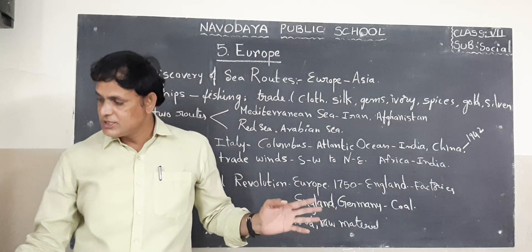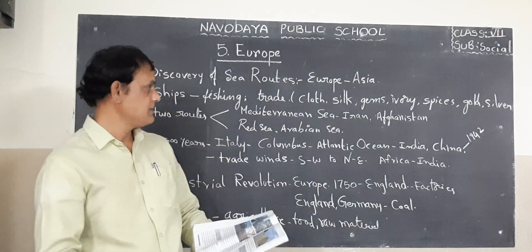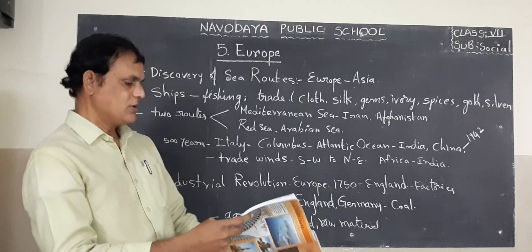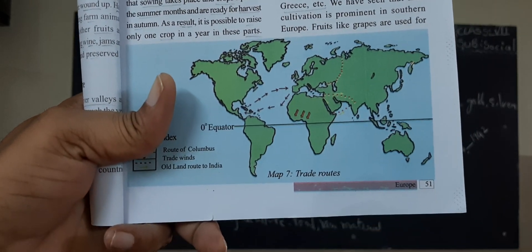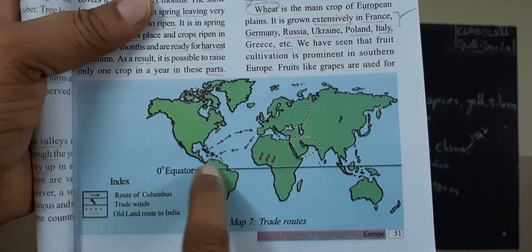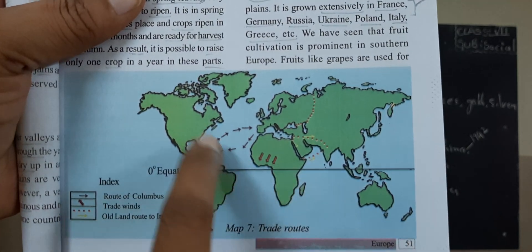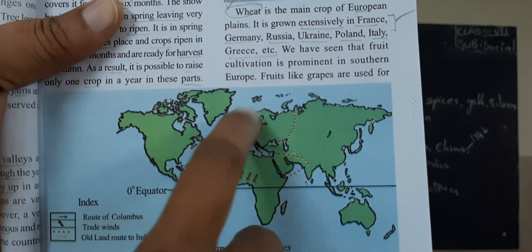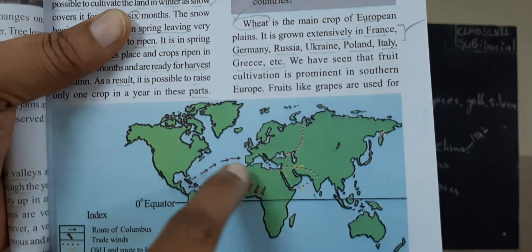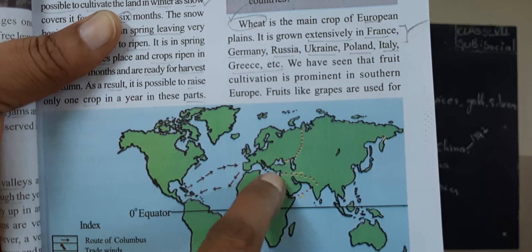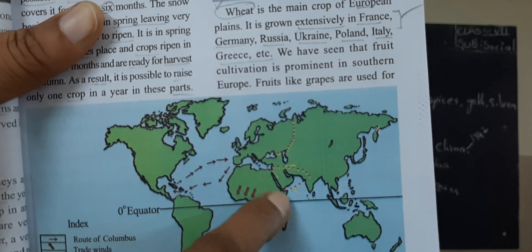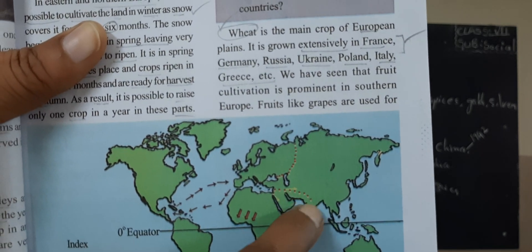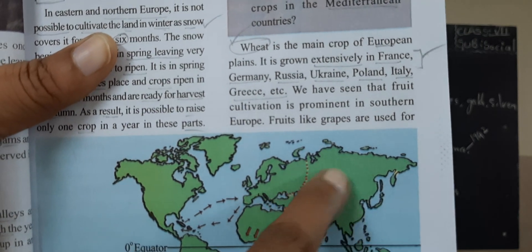Now children, this is the main lesson of your class. Turn your textbook pages to page number 51. Look at the map — this is the Equator, these are the continents. In our lesson, this is the European continent. The countries of Europe include Portugal, Spain, France, and Italy. Here is the Mediterranean Sea, here is the Red Sea, and this is the Arabian Sea — which is to the west of our India. Afghanistan, Russia, etc. are also shown.